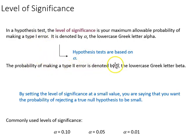The probability of making a type two error is denoted by beta, and that's the alternative scenario. So by setting the level of significance at a small value, you're saying you want the probability of rejecting a true null hypothesis to be small. We do not want to commit type one. So commonly used levels of significance: 0.10, which corresponds to a 90% confidence interval, 0.05, which corresponds to a 95% confidence interval, and 0.01, which corresponds to a 99% confidence interval.